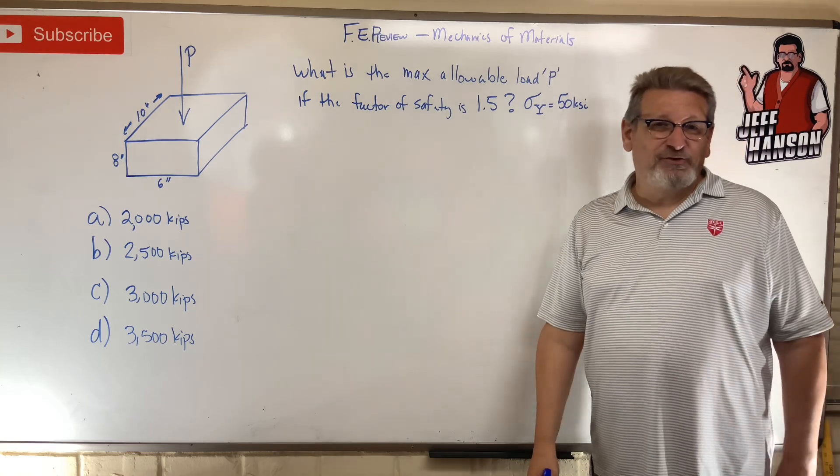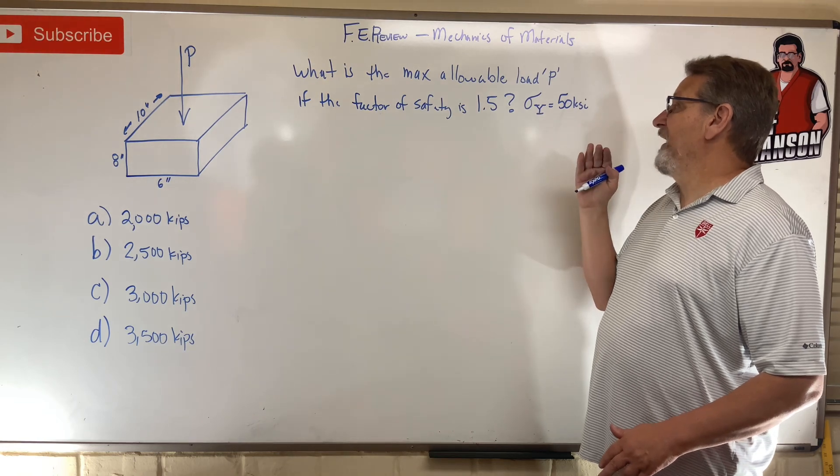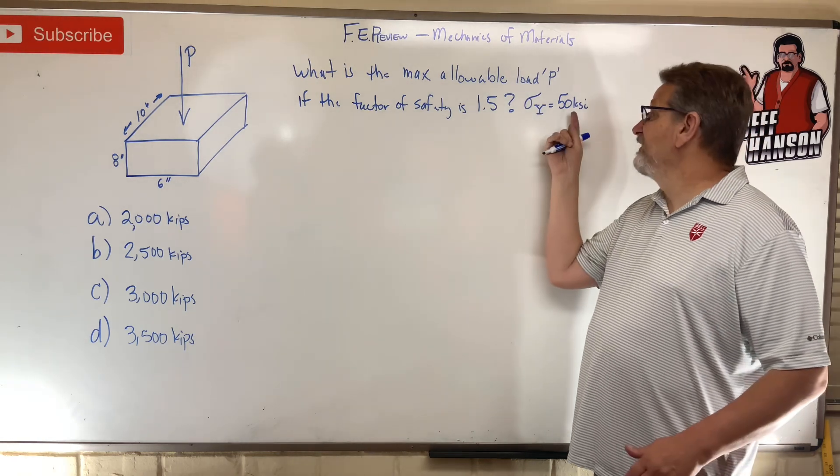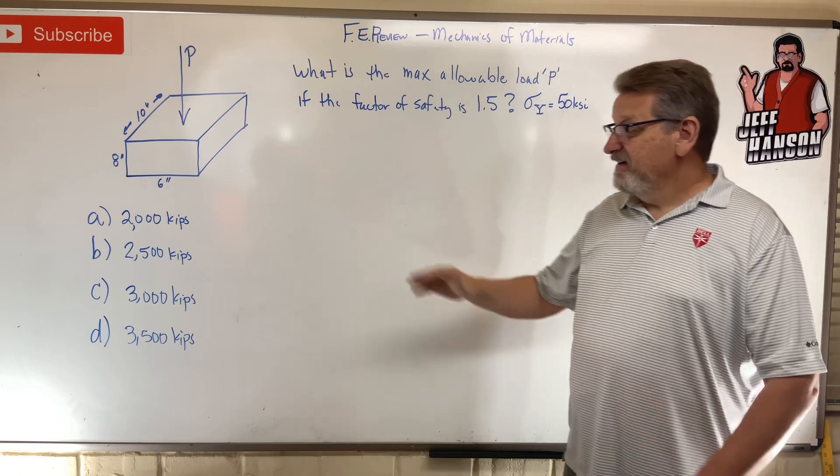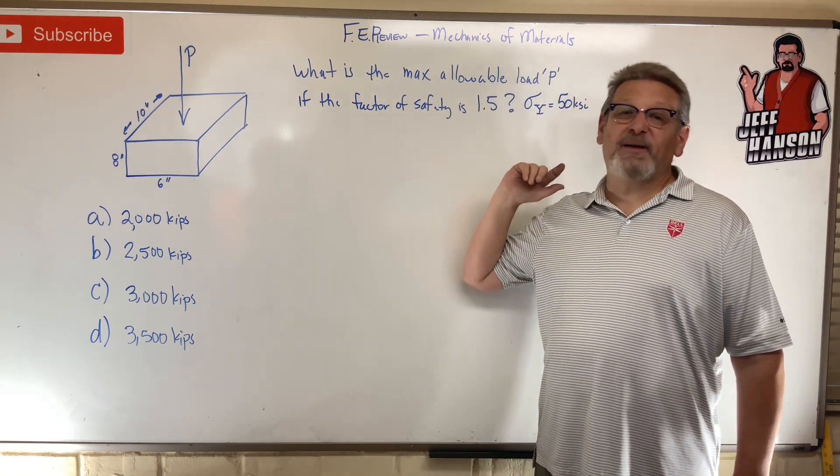is 1.5? This is our first factor of safety problem. They give us sigma Y—that's yield stress—at 50 KSI. Here are your answer choices. Press pause and work it out. When you come back, I'm going to show you how to do it. Ready, set, go!